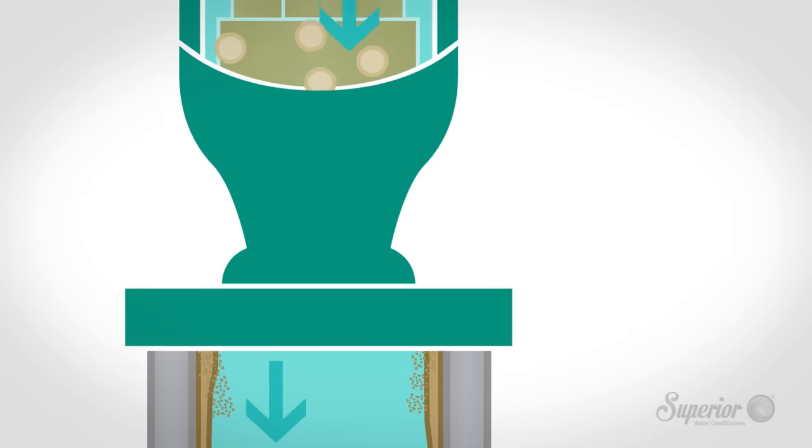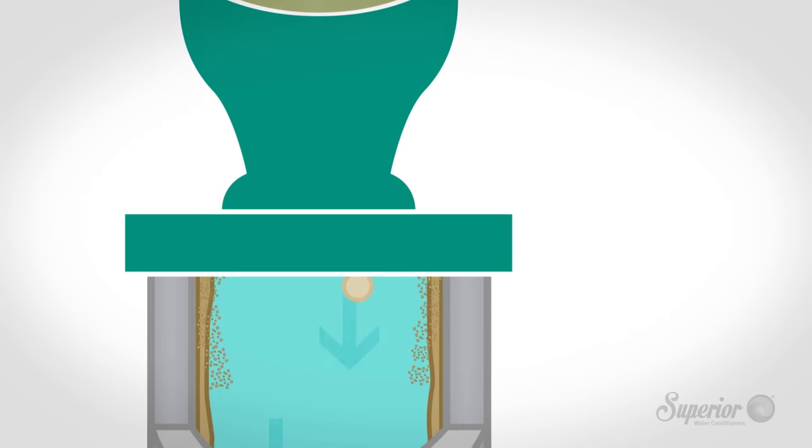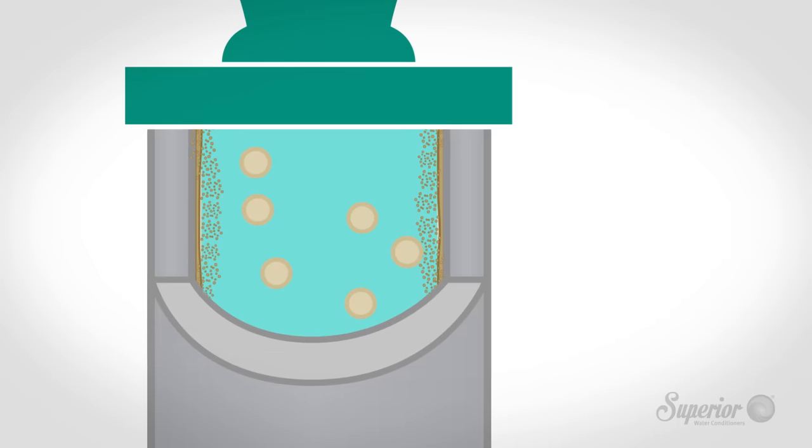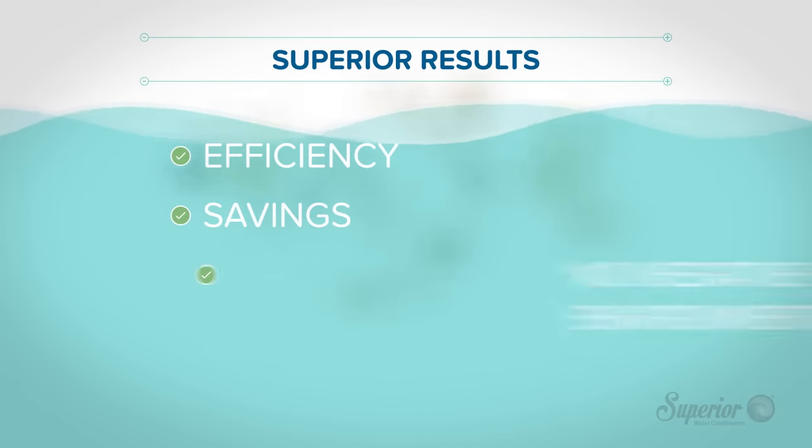The result is dramatic scale reduction and greatly reduced corrosion. Additionally, the Superior Water Conditioner will reduce the water surface tension, causing it to become wetter and more soluble, thus reversing the detrimental effects of existing scale buildup.